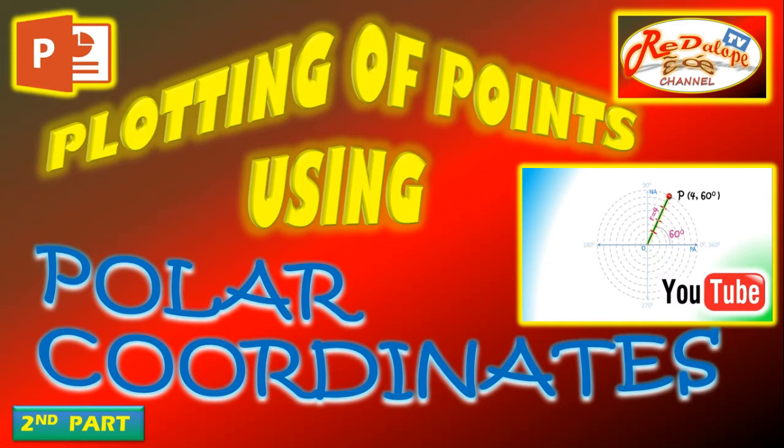In the first part of the tutorial, we dealt with plotting of coordinates where radius and polar angle are both positive. Now, what if the radius and the polar angle is negative? Stay tuned and that is what we are going to find out.